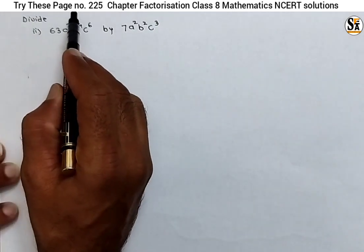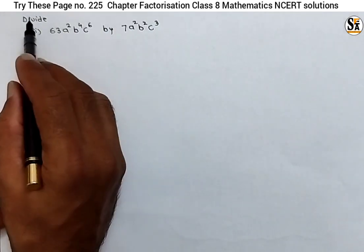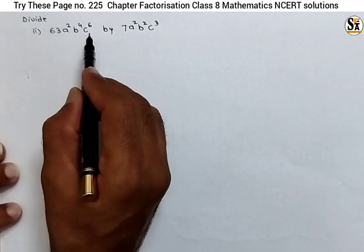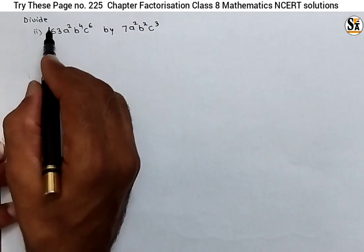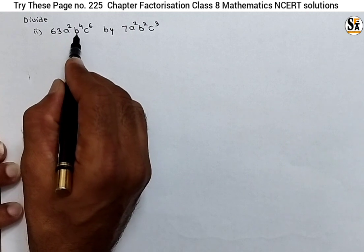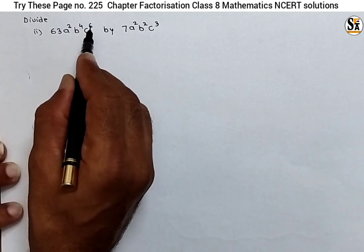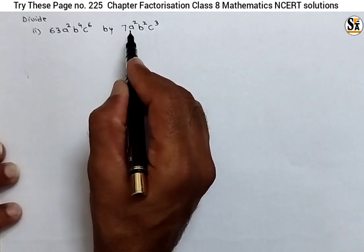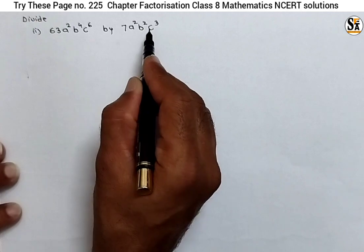The second sub-question of the 'Try This' section, page number 225: divide this expression by this expression — that is 63·a²·b⁴·c⁶ by 7·a²·b²·c³.